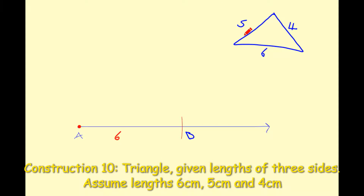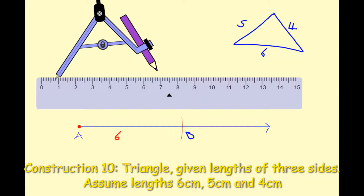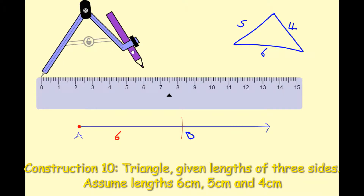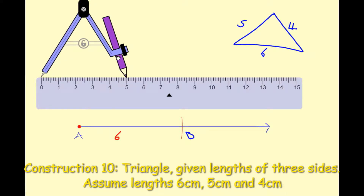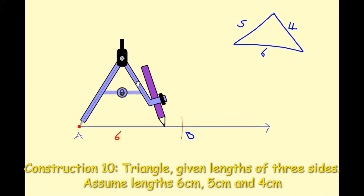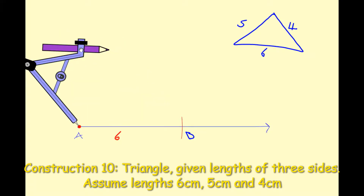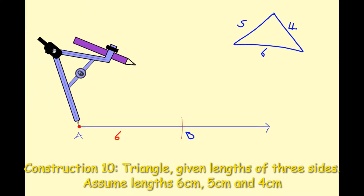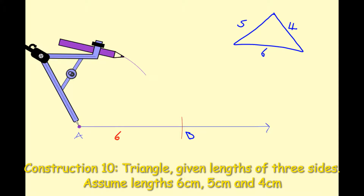Next I want to construct the left-hand side of the triangle, which is five centimetres in length. I'll take out my ruler and compass, place the nib at zero and change the radius to five centimetres, then tighten the compass at that setting. I'll remove the ruler, place the nib at point B, and swing an arc — about a third or quarter of a circle — upward. That arc represents a distance of five centimetres.